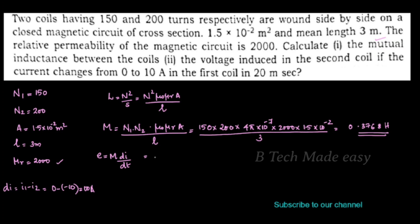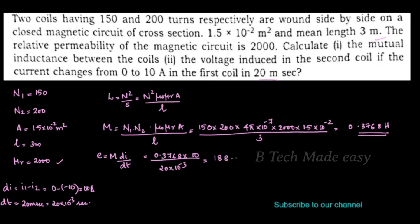E is equal to M × dI/dt. M = 0.3768. The value of dI is 10 ampere. The value of dt is 20 milliseconds, which is 20 × 10⁻³ seconds. Solving this, the answer is 188.4 volts.